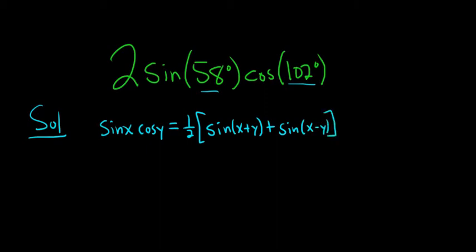Okay, so let's go ahead and write down the problem that we have. So we have 2 sine of 58 degrees cosine of 102 degrees. So if you have the identities in front of you, which I do while I'm making this video, it's really easy. All you do is you pick the correct one and plug in the numbers.